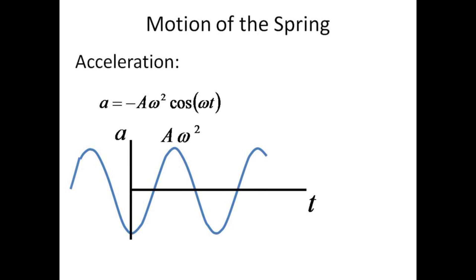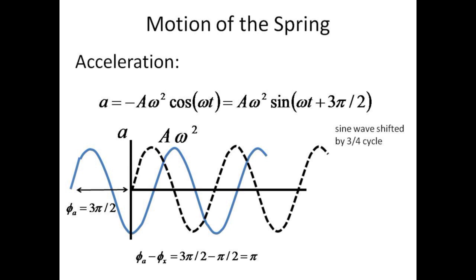The acceleration motion is expressed as minus a omega squared times cosine omega t. The amplitude of this oscillation is just a times omega squared.